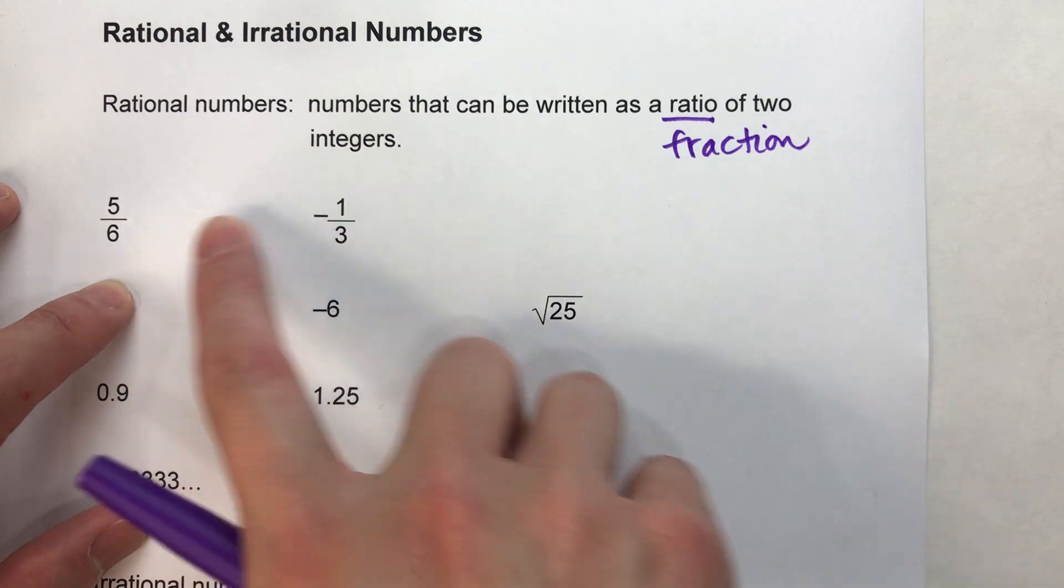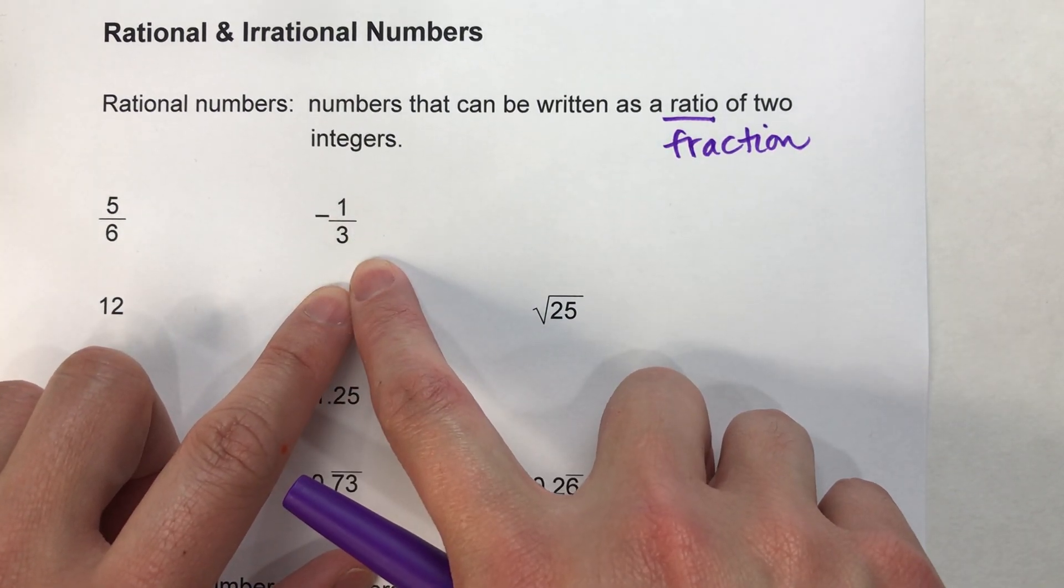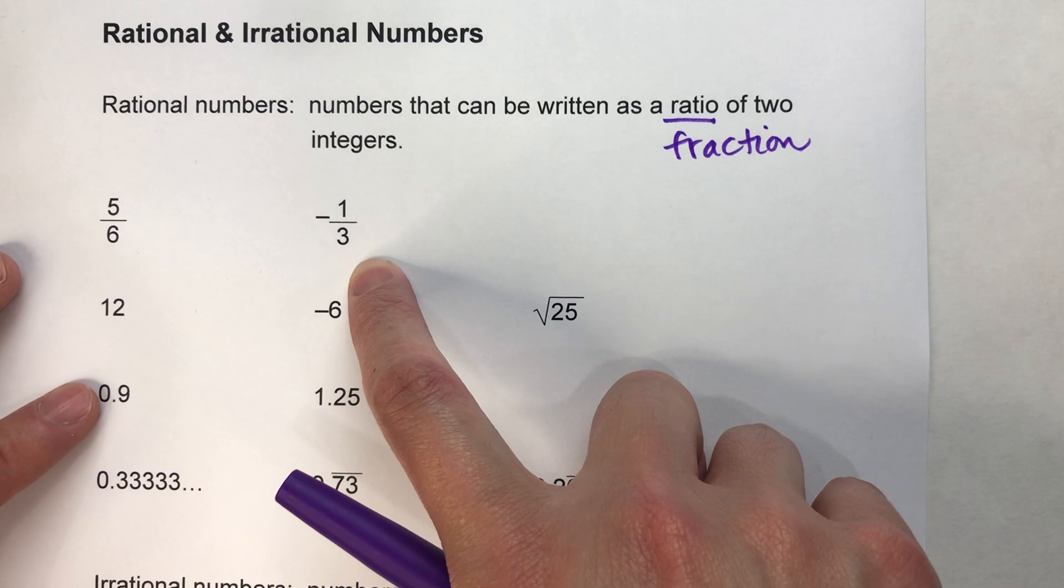So 5/6 is rational. Negative 1/3—it's negative, but it's still a fraction. It's rational.